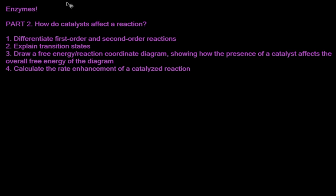So first we're going to differentiate first-order and second-order reactions because enzymes can do both. We're going to explain transition states. We're going to draw a free energy reaction coordinate diagram showing how the presence of a catalyst, such as an enzyme, affects the overall free energy of the diagram. What does it mean? Calculate the rate enhancement of a catalyzed reaction. So what equation do you need for that?